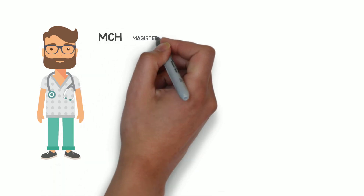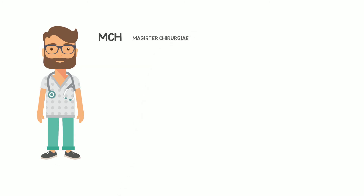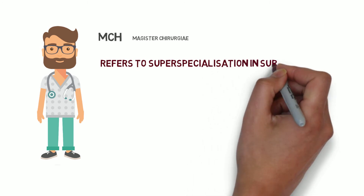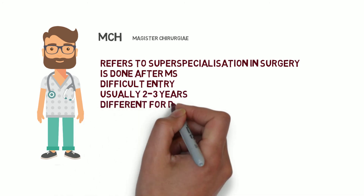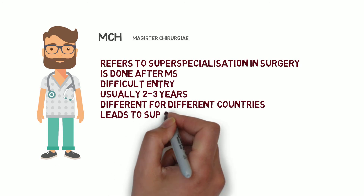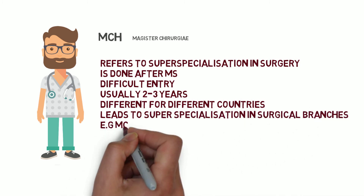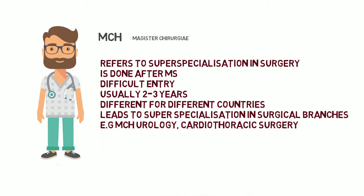Similar to DM after an MD, after an MS you can do an MCH. MCH is the surgical equivalent of DM — it is the super-specialization for surgical branches, just as DM is for non-surgical branches. MCH is done in fields like plastic surgery, urology, cardiothoracic surgery, and microvascular surgery. That, in a nutshell, is a brief description of what MBBS, MS, MD, DM, and MCH all stand for.